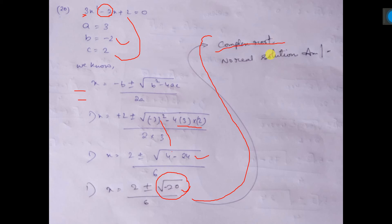You write this, or you write no real solution, both are correct. Because since under root it is coming negative, so no real solution you will get from here.